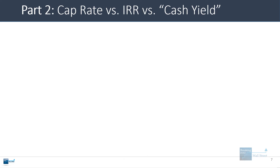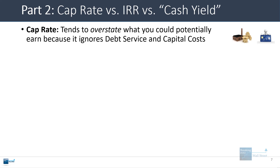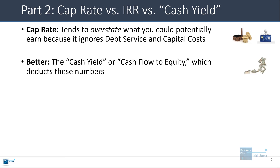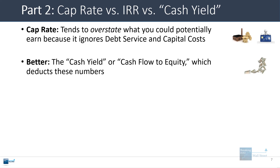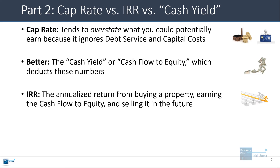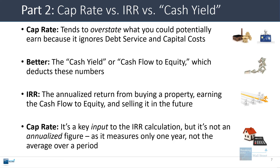The difference between the cap rate, the IRR, and the cash yield: one issue with the cap rate is that it tends to overstate what you could earn on a property because it ignores debt service and capital costs — both real cash costs you have to pay. The cash yield, otherwise known as the cash flow to equity number, deducts both of these outflows, giving a more realistic estimate of what you might actually earn when acquiring a property using a combination of debt and equity. The IRR is the annualized return from buying a property, earning the cash flow to equity, and selling it in the future — it's not the same as the cap rate, which measures just one year of performance.